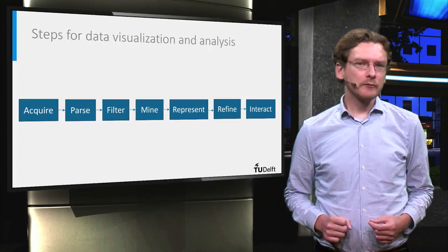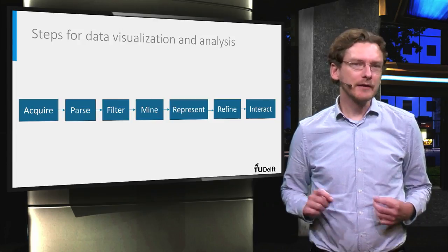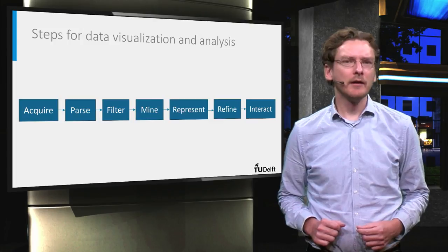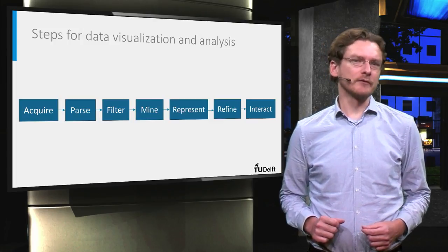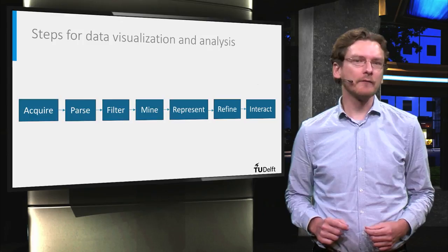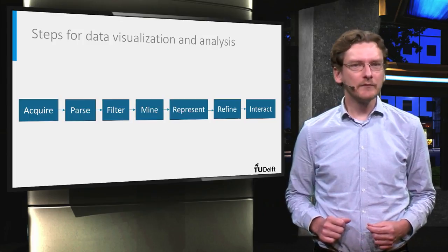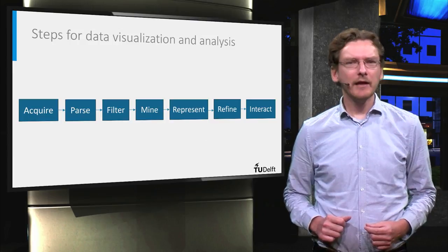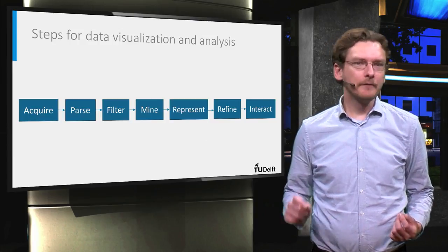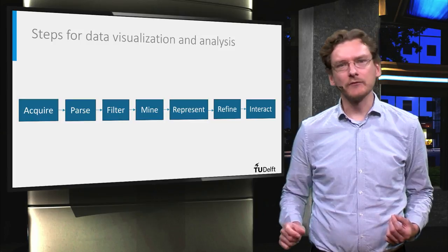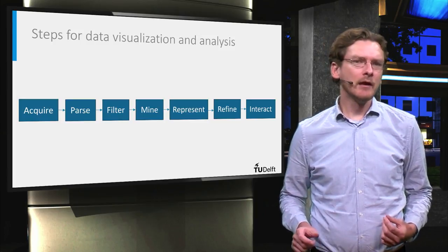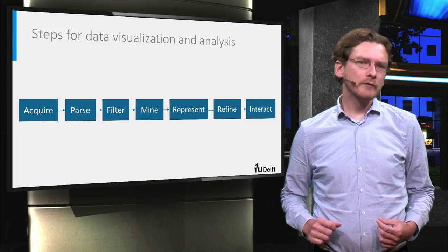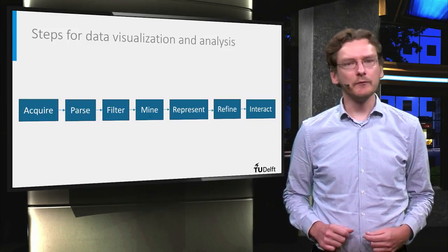When you do data visualization and analysis at a very basic level, you have to get the data, be able to process it, and create the visualization itself. There are often a lot more steps than this, and a good overview of what often has to be done is provided by Ben Fry in his PhD thesis on computational information design. In this, he talks about the steps of acquire, parse, filter, mine, represent, refine, and interact. The link to the original PhD thesis can be found on the platform.